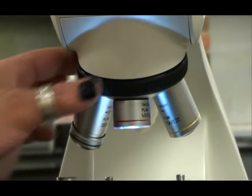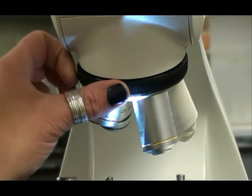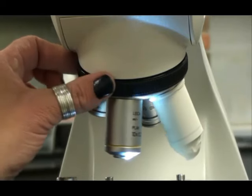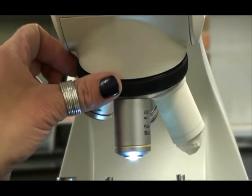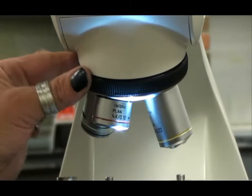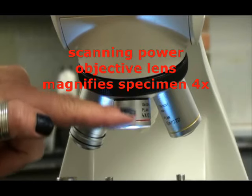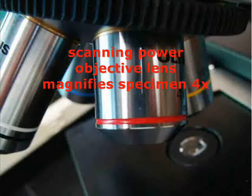The objective lenses are located on a rotating nose piece. Each lens hangs down from this nose piece and can be turned and clicked into position. The shortest objective lens is called the scanning power. It has a red band around it and it magnifies the specimen four times actual size.